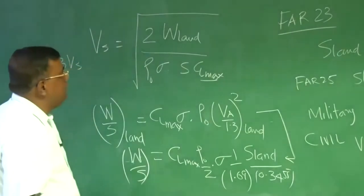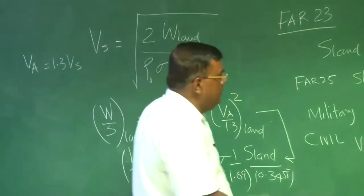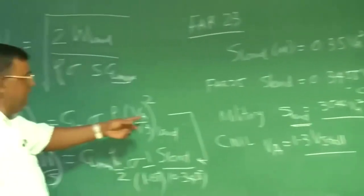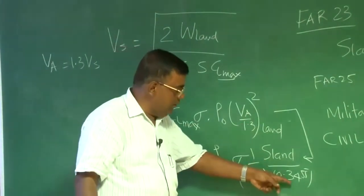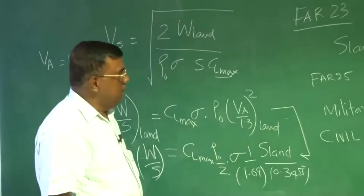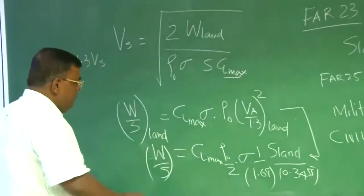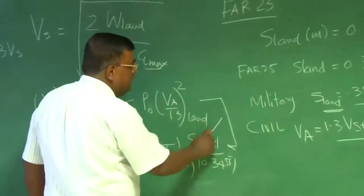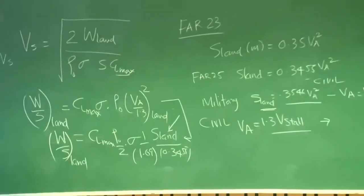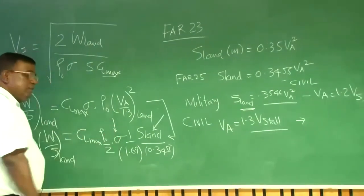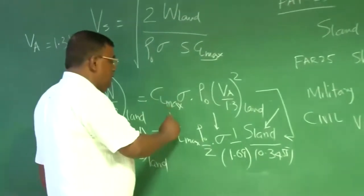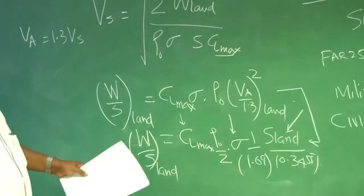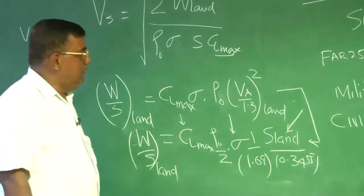I hope you have understood how we have come from here to here, if the V_A/1.3 is clear. Also we know s_land = 0.3546 × V_A². So V_A = √(s_land/0.3455). That is exactly what has been put here. Now life is simple. If I want W/S for landing, I need to know what is the land roll distance I want. I need to know what is σ, the density ratio. I need to know what is C_L_max of the airplane I am designing. That is all. This becomes very simple.